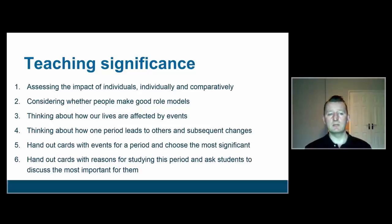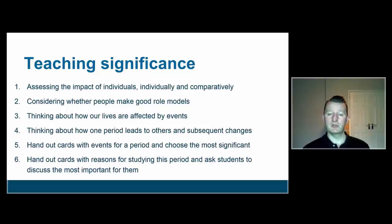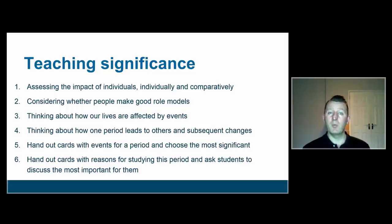So how might we go about teaching significance? We can ask children to assess the impact of individuals individually and comparatively. We can look at case studies of great, significant, important people and compare people within and across periods of time to assess their significance. A typical example in UK classrooms would be to look at Martin Luther King and Malcolm X as two significant members of the civil rights movement, thinking about their different strategies and their significance in moving America towards greater recognition of equality.